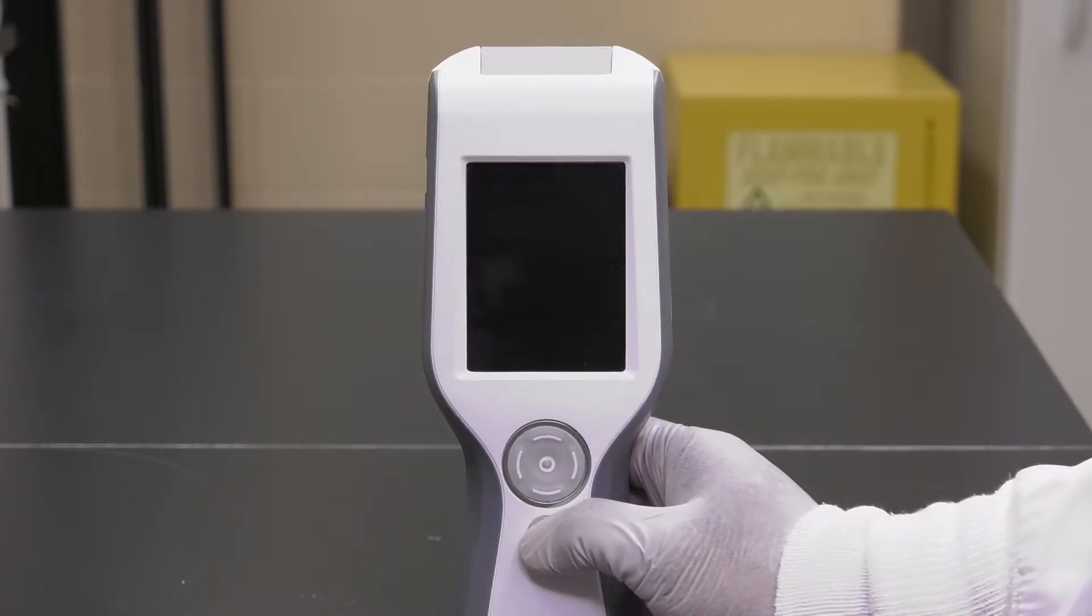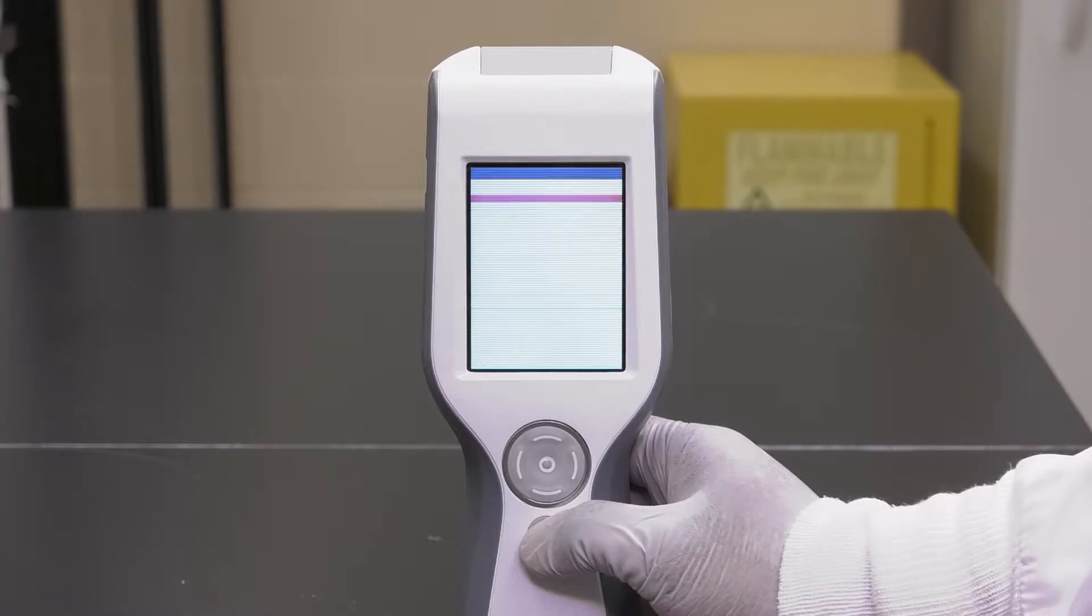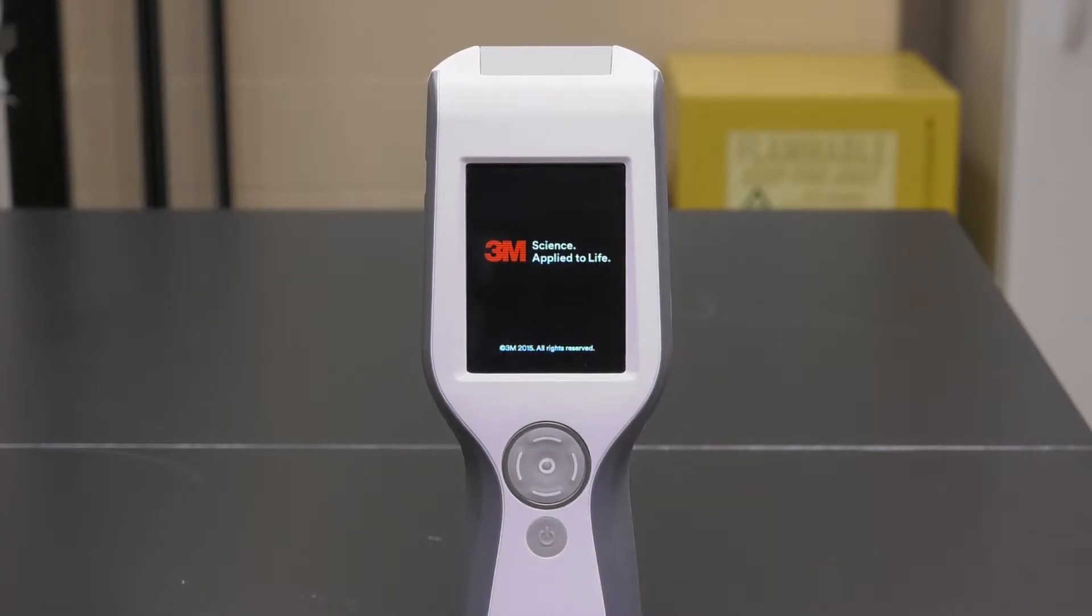Then press and hold the gray on off button located below the cursor control button for three to five seconds and let it go. After about 10 seconds of black screen, a color changing 3M logo will appear to confirm the power on process has started.